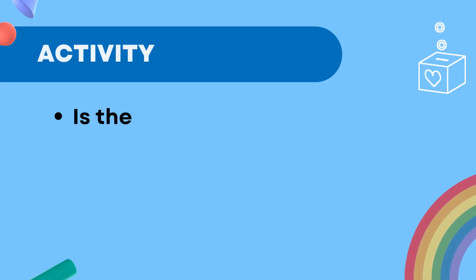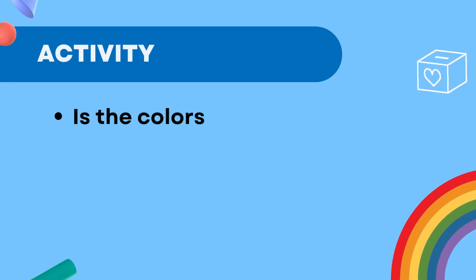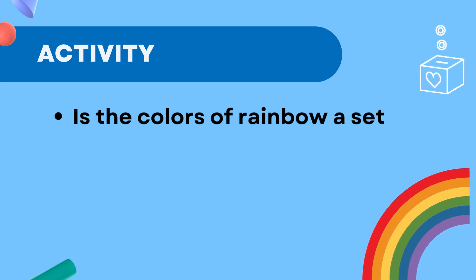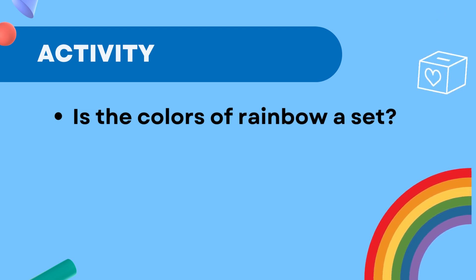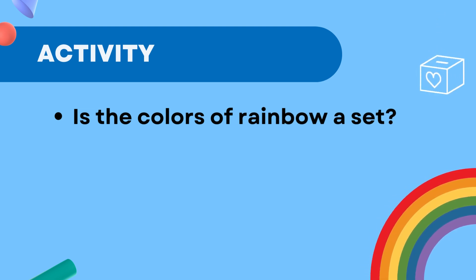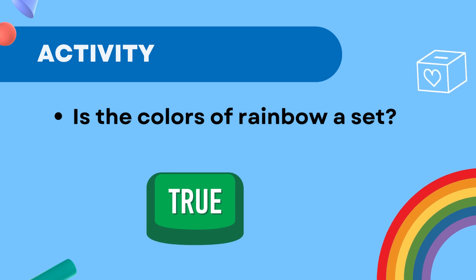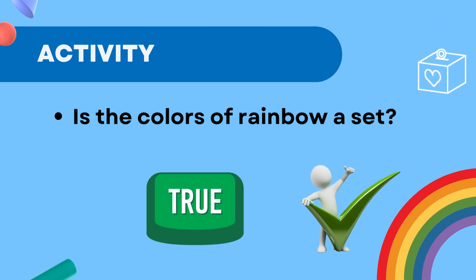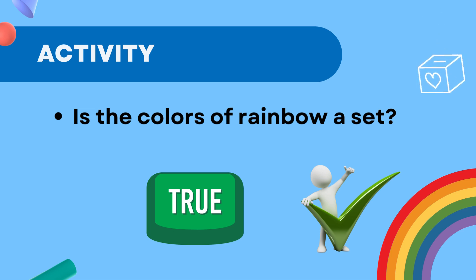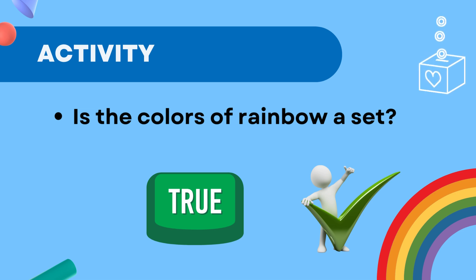Is the colors of a rainbow a set? The answer is true. The reason being that the colors of a rainbow are well-defined, listed colors that you can represent within a set. Hence, true.